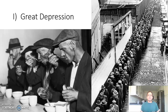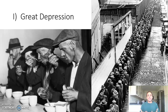Some good ways to do analysis here is comparatively — Hoover and FDR — what are their different approaches, what are their different philosophies towards government and towards providing aid to Americans during the Great Depression. That's a good way to analyze some of the different things happening during the Depression.